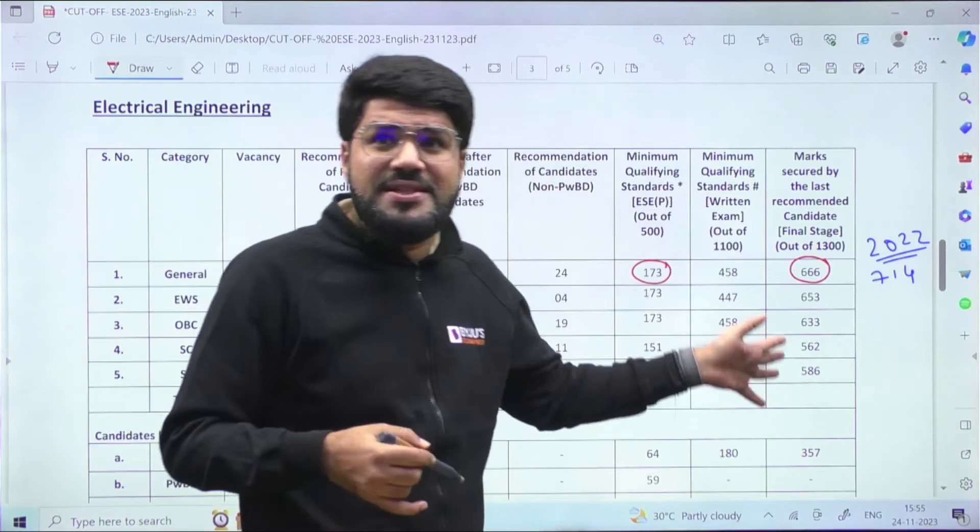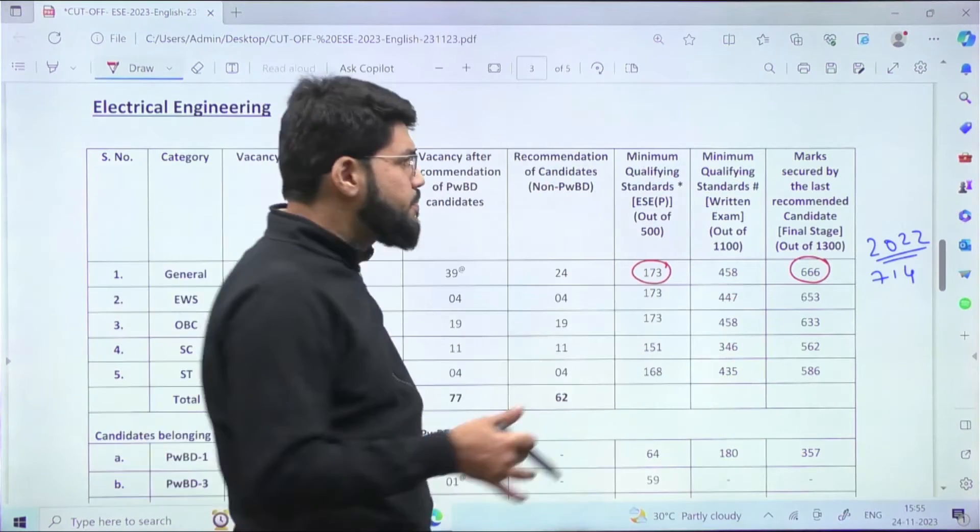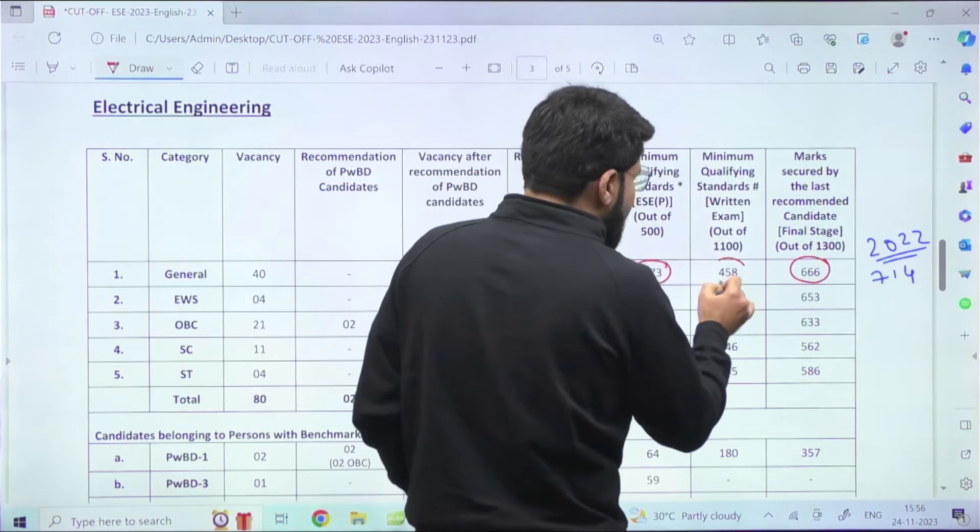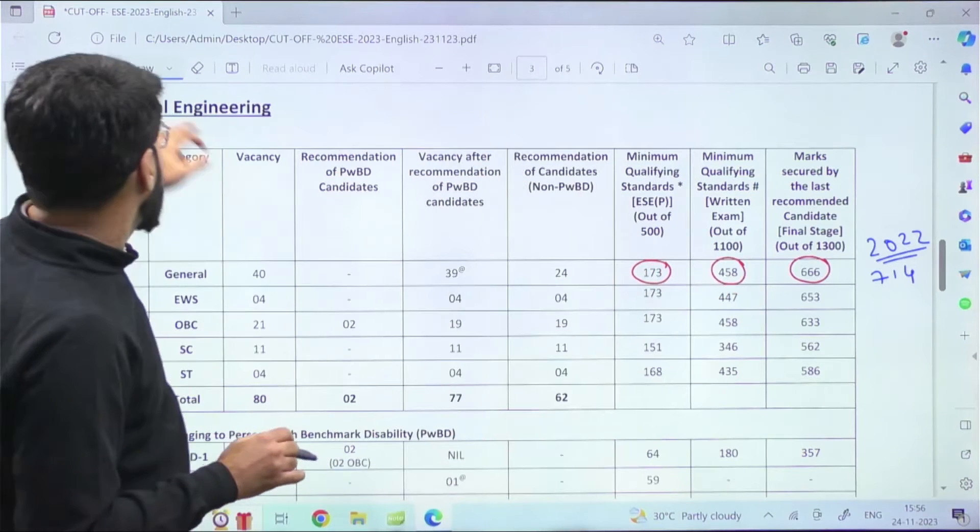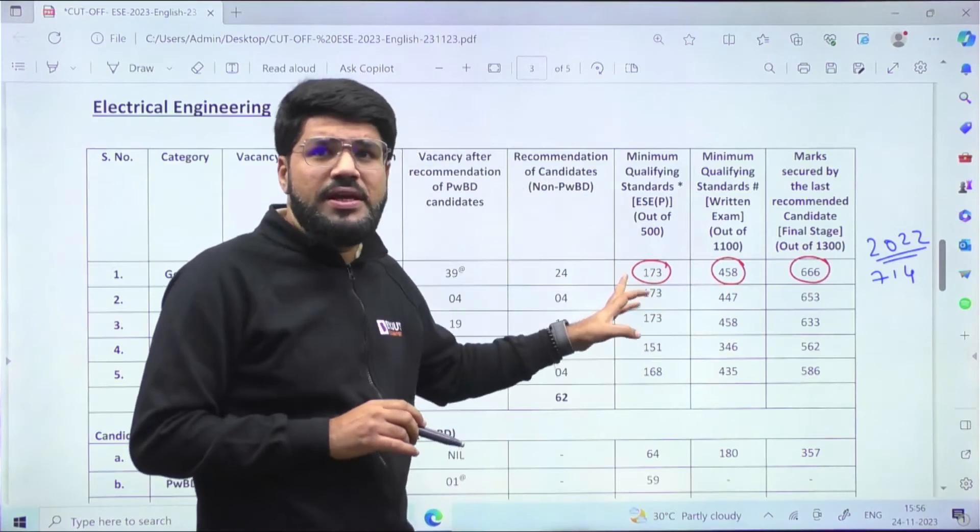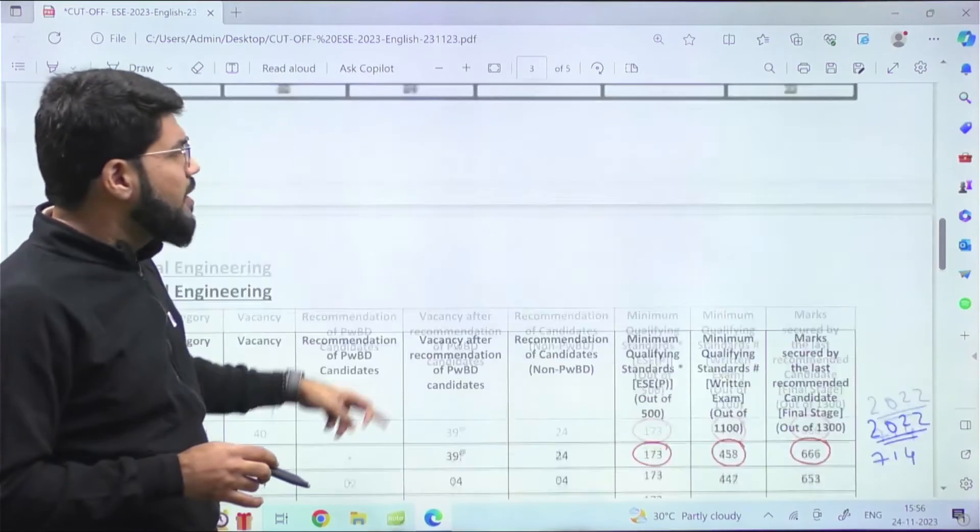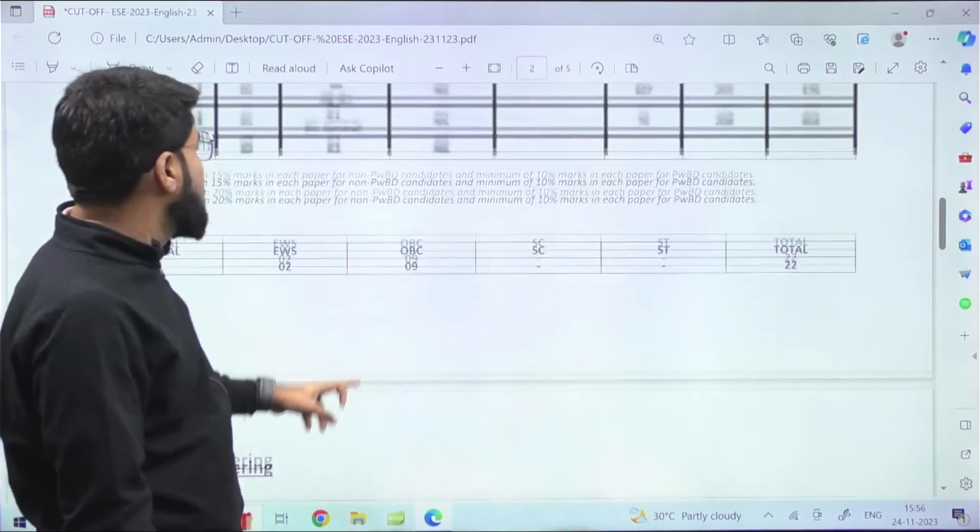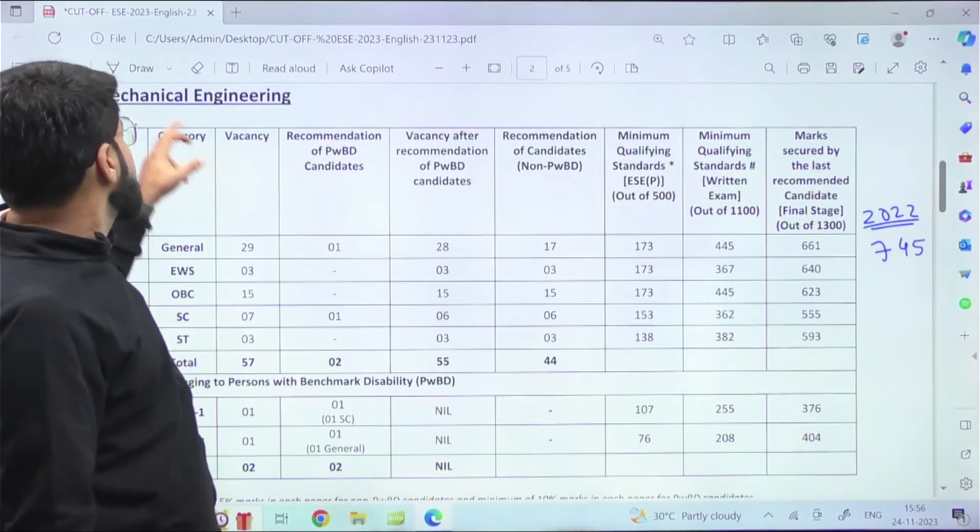Electronics 124, I believe, is the lowest in the history of this prelims pattern. Out of 1100, it is 458 for Electrical Engineering. Even this 173 is a significantly low figure - usually for Electrical it used to be around 190, 200, and even up to 225-230. This year it has been low.